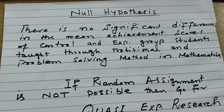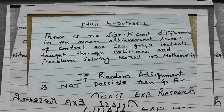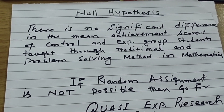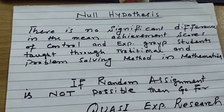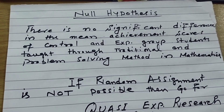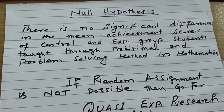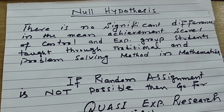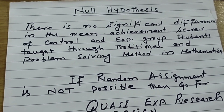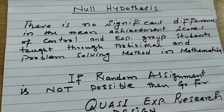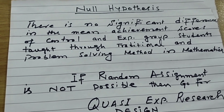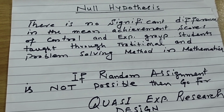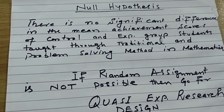Dear students, in today's video I will tell you how we analyze data from an experimental research design. For example, we have a hypothesis that there is no significant difference in the mean achievement scores of control and experimental group students taught through traditional and problem-solving methods in mathematics.